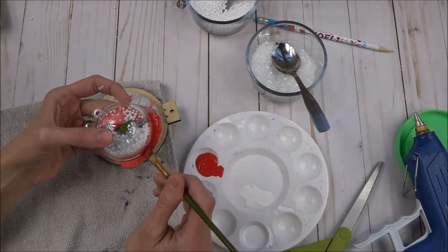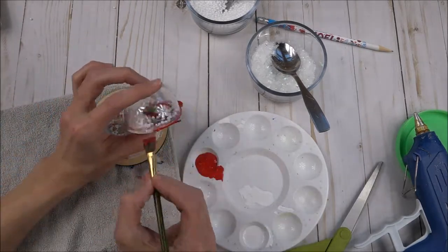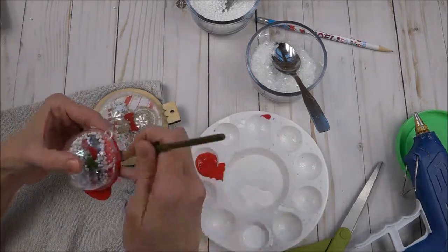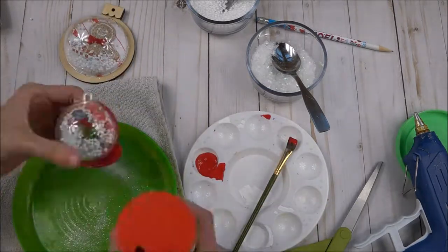Paint the edges of each snow globe, even painting over some of the dried hot glue like I did. Add glitter before the paint dries, and a string for hanging it after it's done.